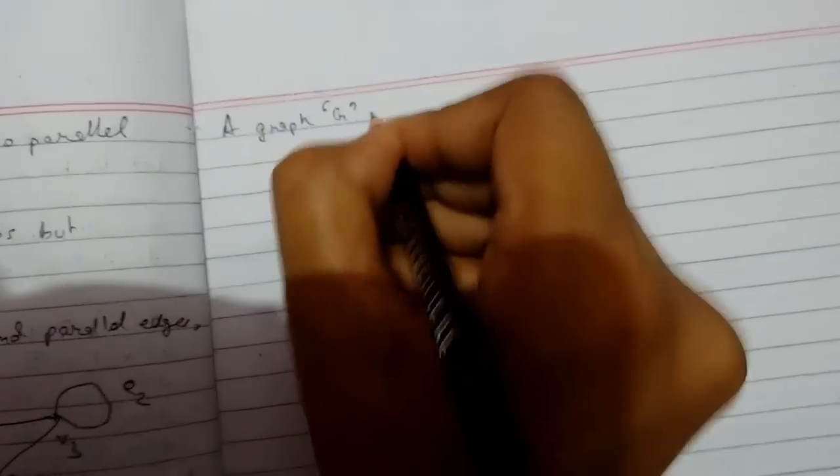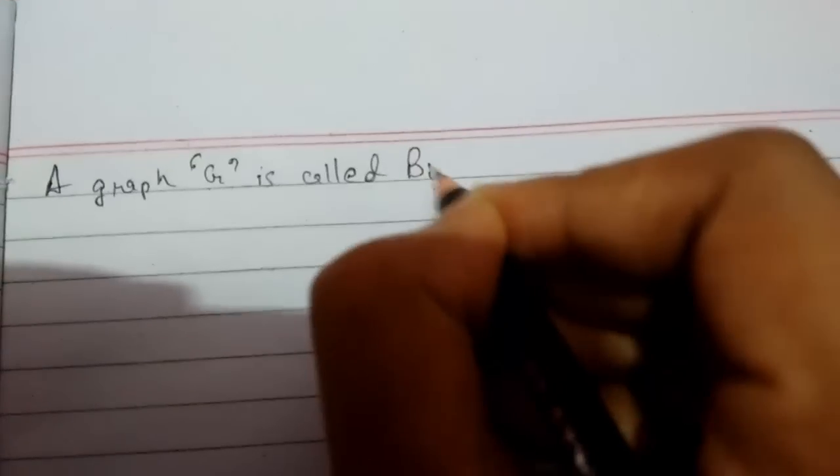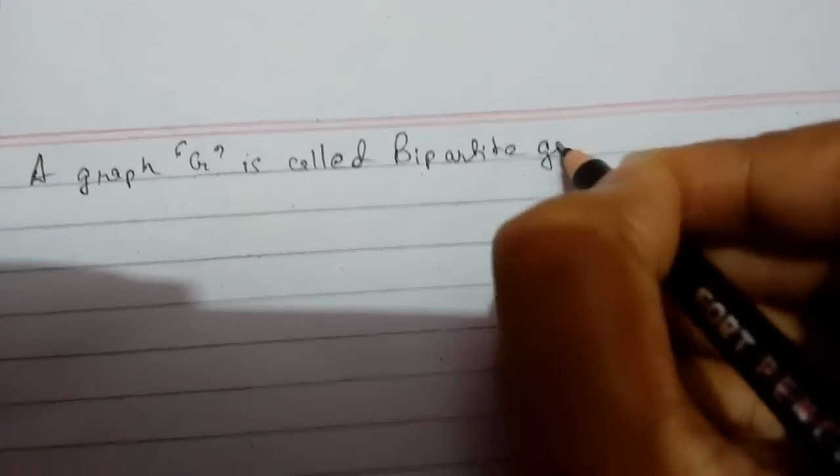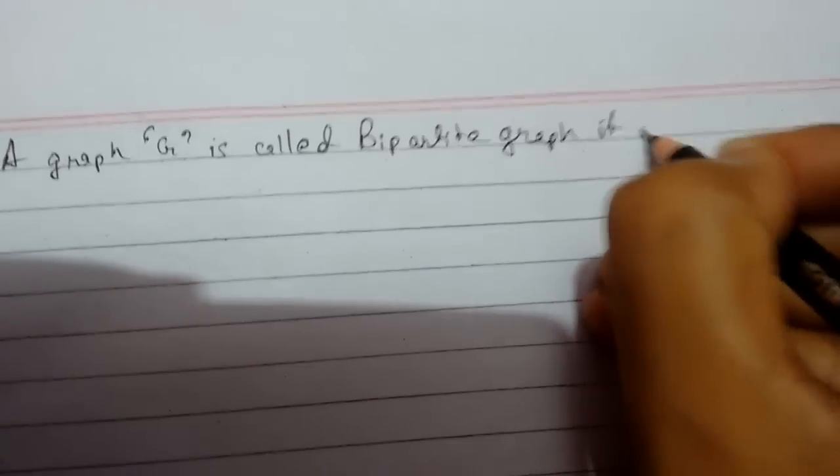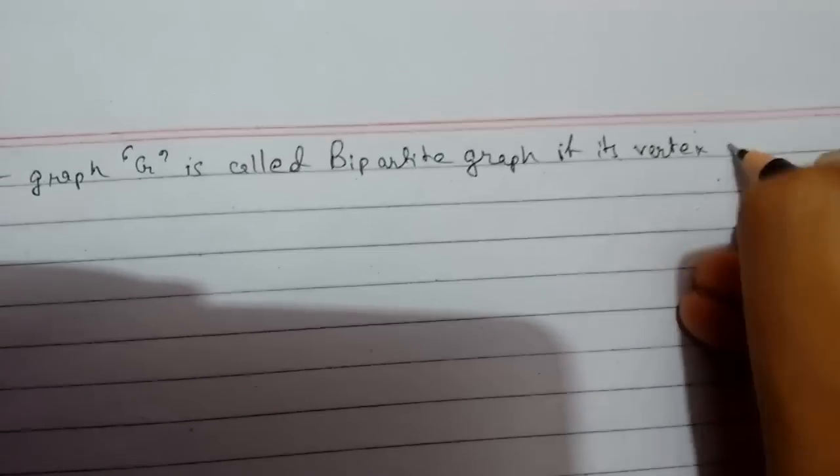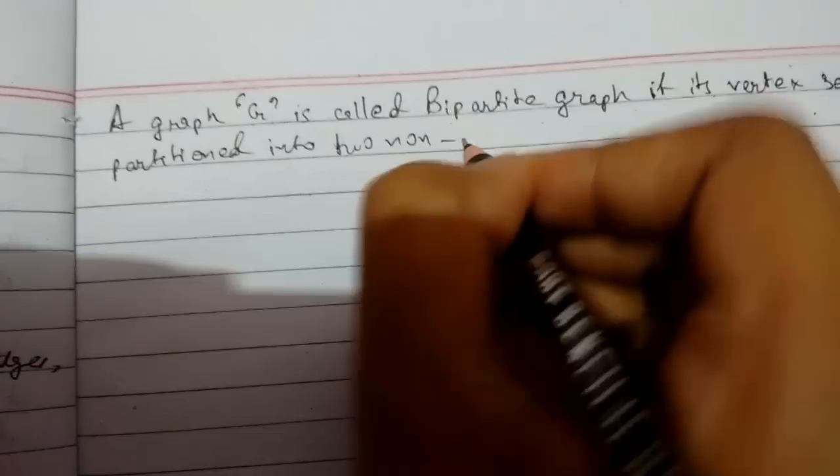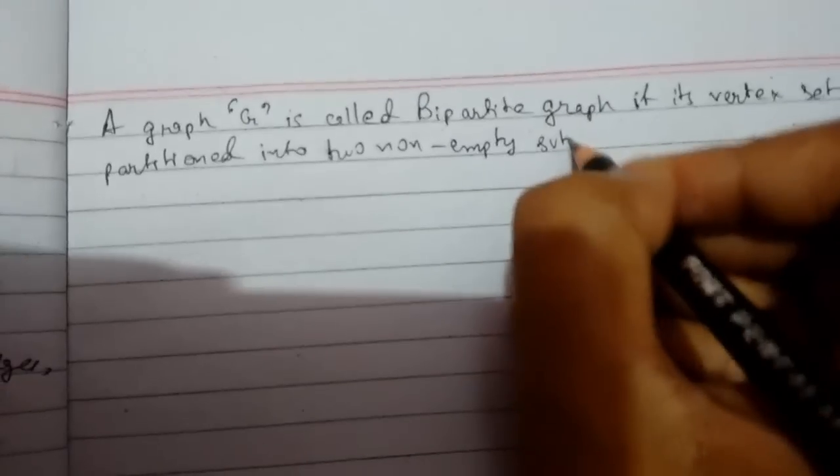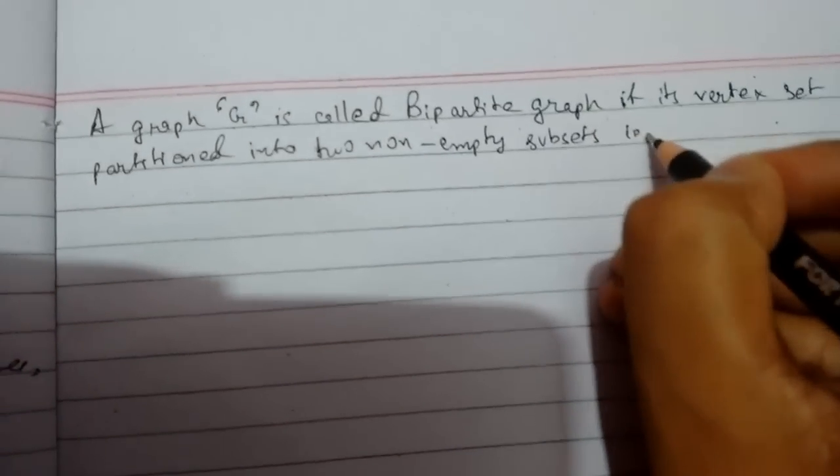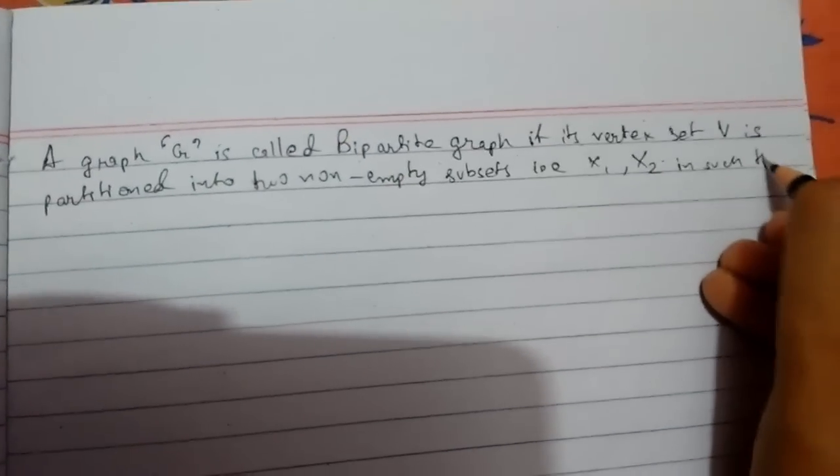A graph G is called a bipartite graph if its vertex set V is partitioned into two non-empty subsets, x1 and x2, such that - these are the vertex sets.